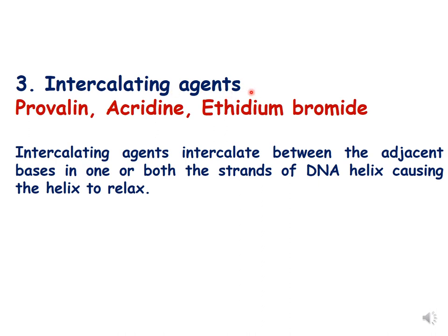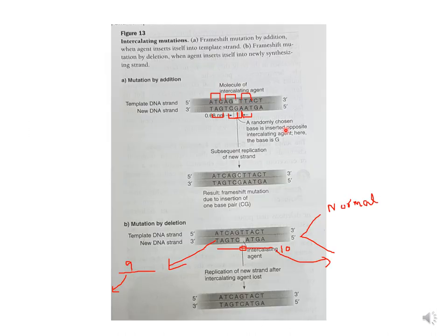The last category of chemical mutagens is intercalating agents, which result in frameshift mutations. The previous two categories caused point mutations, but intercalating agents intercalate between the bases, resulting in frameshift mutations. Examples are proflavin, acridine, and ethidium bromide. They intercalate between adjacent bases in one or both strands of DNA, causing the helix to relax. Frameshift mutation by addition occurs when an agent inserts into the template strand; frameshift mutation by deletion occurs when the agent inserts into the newly synthesized strand.